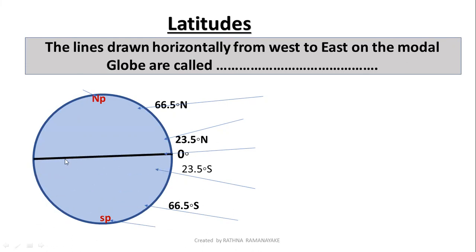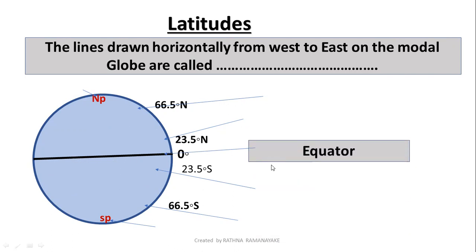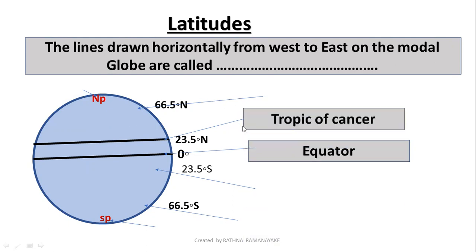The central latitude — latitude zero — is called the equator. North latitude 23.5 degrees is known as the Tropic of Cancer. South latitude 23.5 degrees is known as the Tropic of Capricorn.